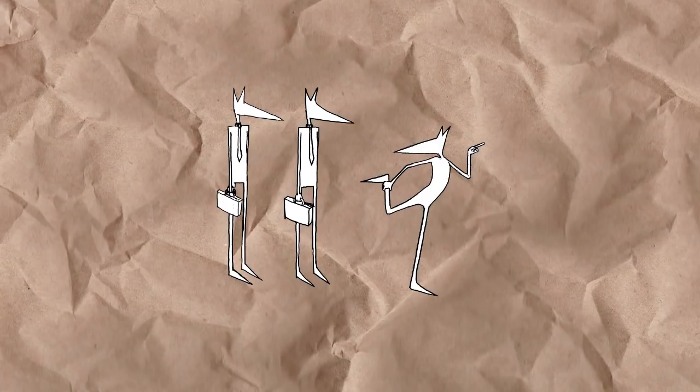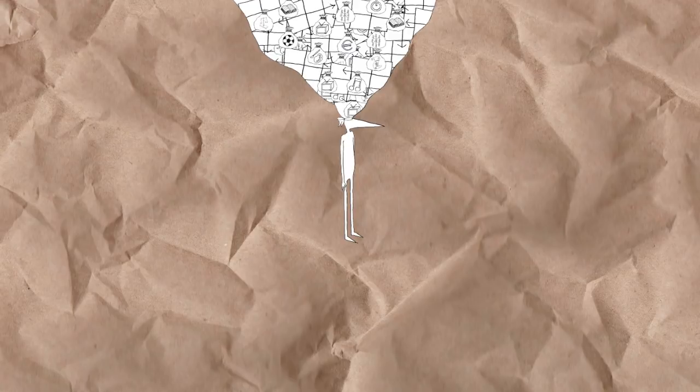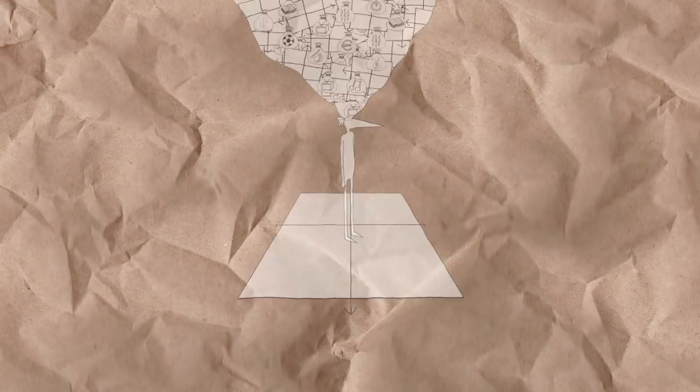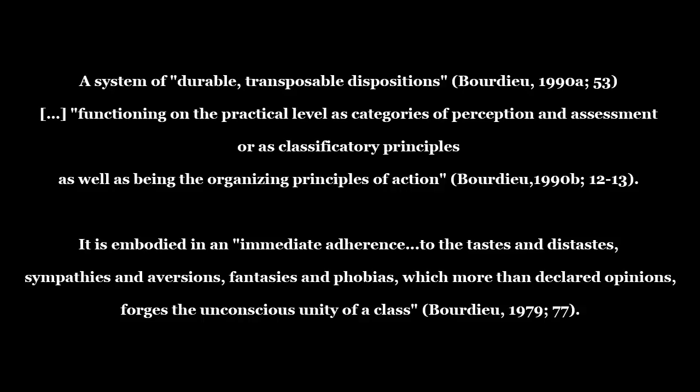Habitus. Habitus is Bourdieu's most important concept. It allows field theory to account for people's agency within fields. That is, it accounts for how different people manage their resources differently. Bourdieu describes the habitus as a system of durable, transposable dispositions functioning on the practical level as categories of perception and assessment, or as classificatory principles as well as being the organising principles of action. It is embodied in an immediate adherence to the tastes and distastes, sympathies and aversions, fantasies and phobias, which more than declared opinions, forges the unconscious unity of a class.